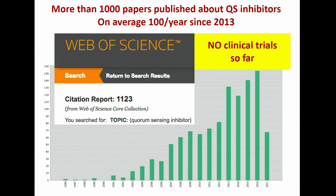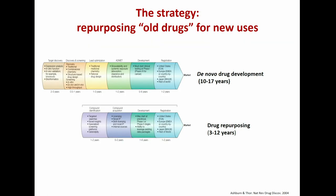One reason could be that when you find a new active molecule and want to bring it to the clinic, you need a lot of research, money, and time. It takes from 10 to 12 years, starting from the identification of the active principle, then characterizing the mechanism of action, making experiments in vitro and in animal models, making formulations, and all the toxicity and pharmacokinetic studies.